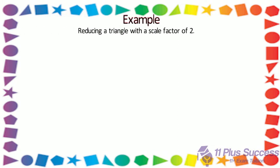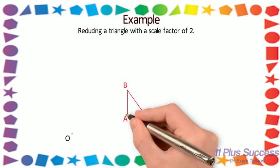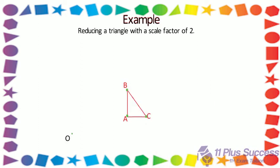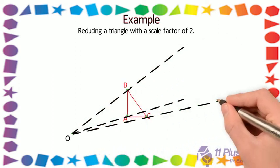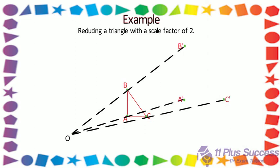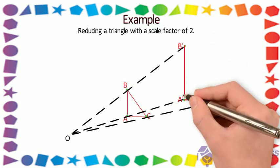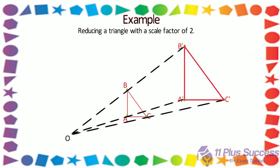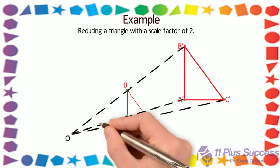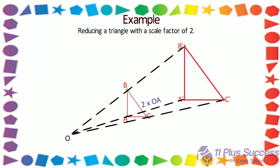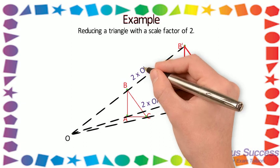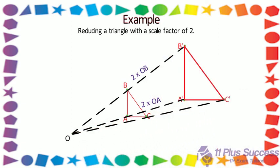Example: Enlarging a triangle with a scale factor of 2. Step 1: Draw a line from the center of enlargement to the points of the shape — a line is drawn from point O through to point A of the triangle. Step 2: Extend the lines and draw the new points — extend the lines at the same distance from O through to points A, B, and C. Step 3: Join all the new points, so that OA' = 2 × OA, OB' = 2 × OB, and OC' = 2 × OC.